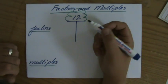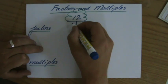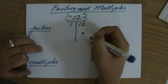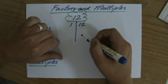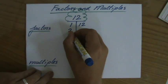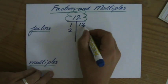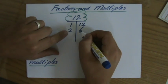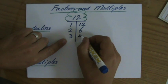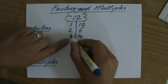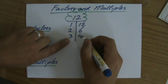So what times what is 12? Well first of all, I'll start at the beginning, 1 times 12 is 12. So that makes 1 and 12 factors of 12. 2 times 6 indeed is 12. So 2 and 6 are also factors of 12. 3 times 4 is 12. 3 and 4 are the factors of 12.